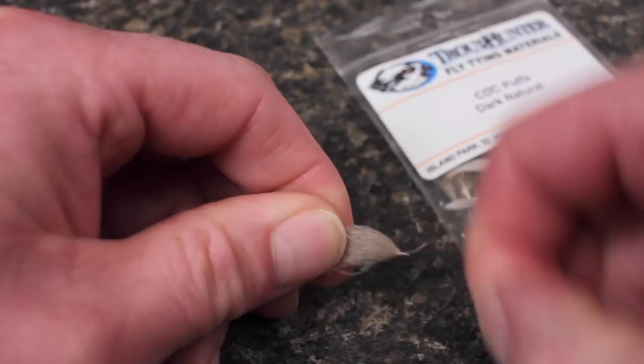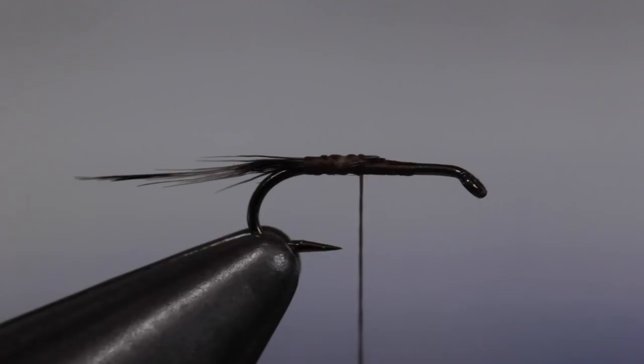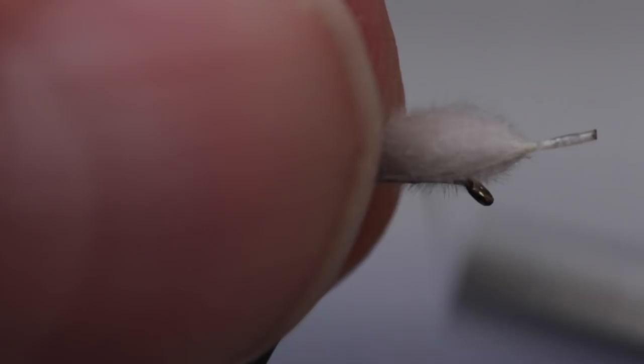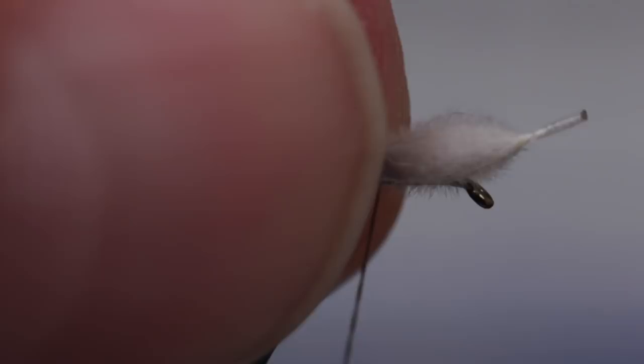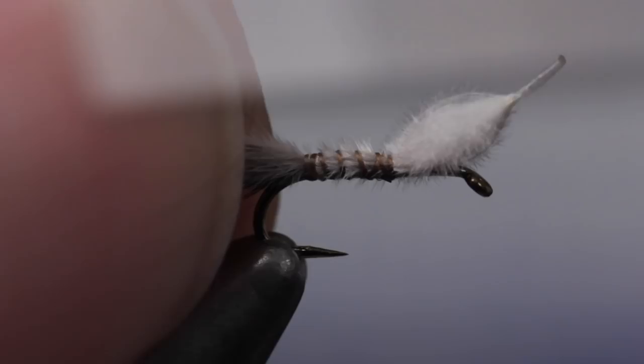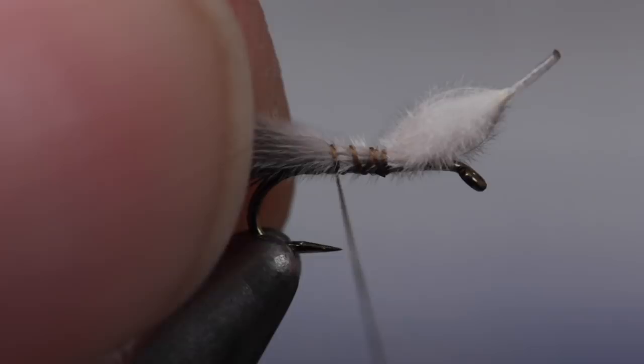With the fibers pulled up and parallel to the stem, lay the puff on top of the hook shank with the lower ends of the fibers, not including the very butt, extending to just in front of the hook eye. While maintaining this position, take thread wraps to secure the puff to the top of the hook shank. Continue taking wraps rearward all the way back to the bend.